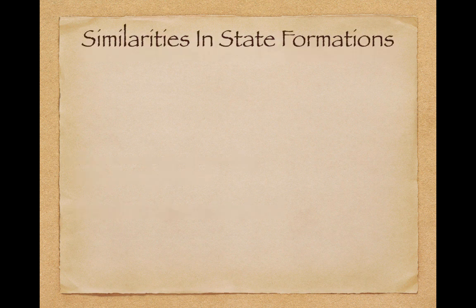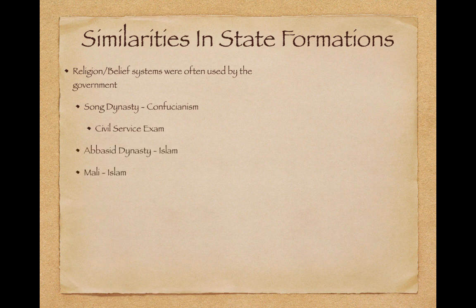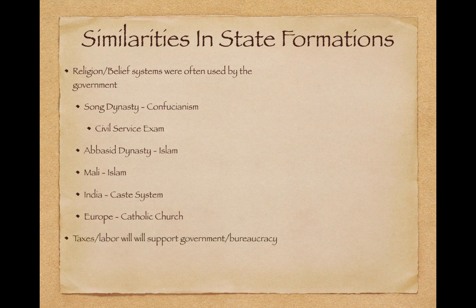Some similarities to state formations: religion and belief systems were often used by the government. In the Song Dynasty they used Confucianism with the civil service exam, which was instrumental in hiring government employees. In the Abbasid Dynasty we see Islam, and in Mali we also see Islam. In India we have the Hindu caste system, and much of Europe is focusing on the Catholic Church.